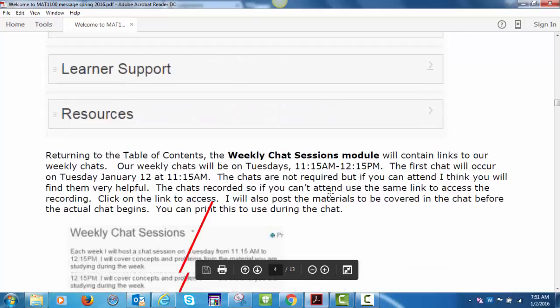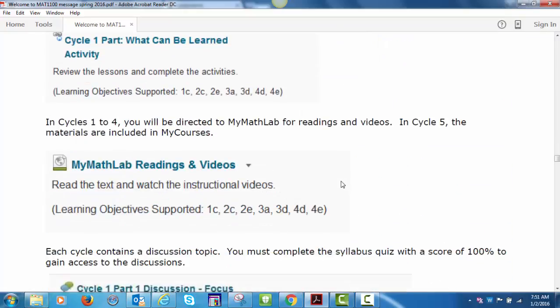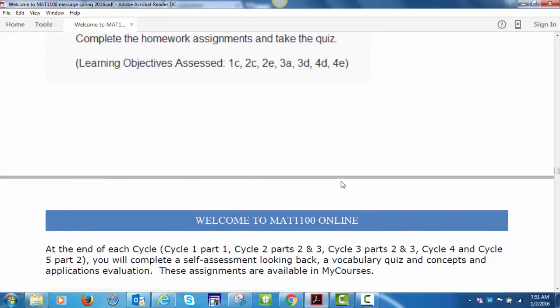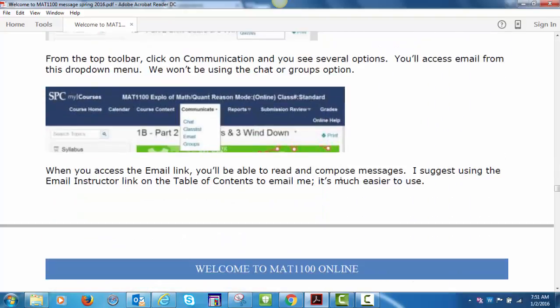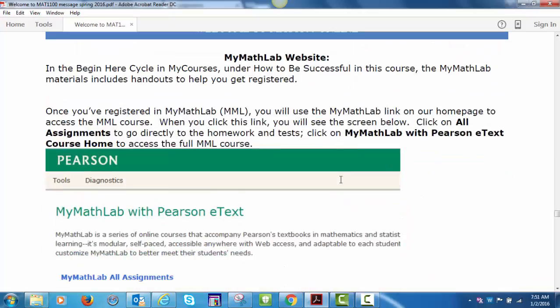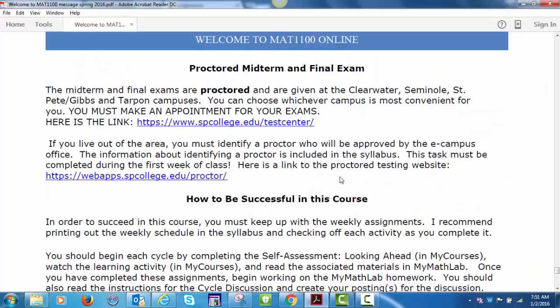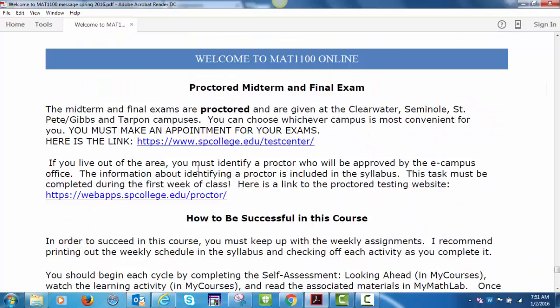The midterm and final exams are proctored and are given at Clearwater, Seminole, St. Pete Gibbs, and Tarpon campuses. You can choose whichever campus is most convenient for you, and you must make an appointment for your exams. Here is the link. If you live out of the area, you must identify a proctor who will be approved by the eCampus office. The information about identifying a proctor is included in the syllabus. The task must be completed during the first week of class.